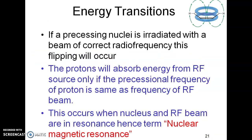If a precessing nucleus is irradiated with a beam of correct radio frequency, then only the flipping occurs. Whenever the precessional frequency of a nucleus spinning under the external magnetic field matches with the incoming radio frequency, a resonance takes place, and only then does absorption occur, which leads to flipping. A proton will absorb energy from an RF source only if the precessional frequency of the proton is the same as the frequency of the RF beam.